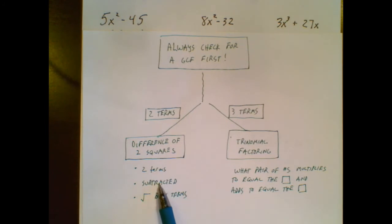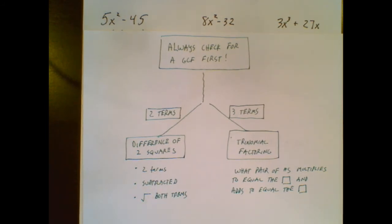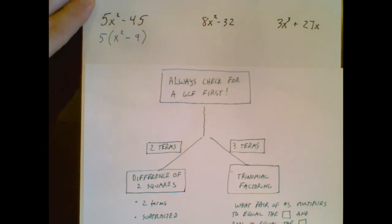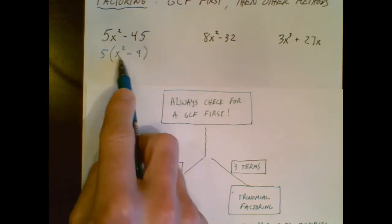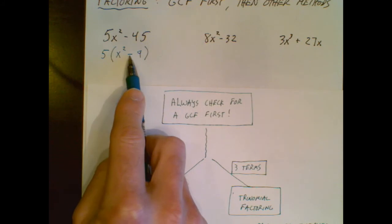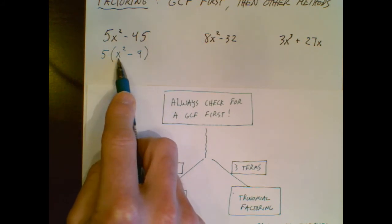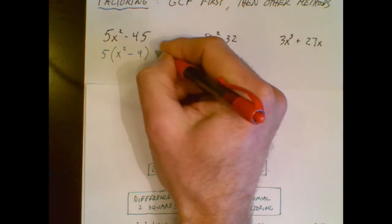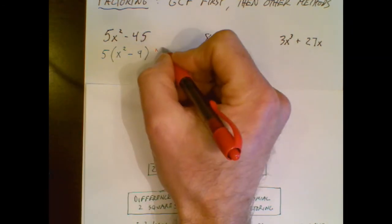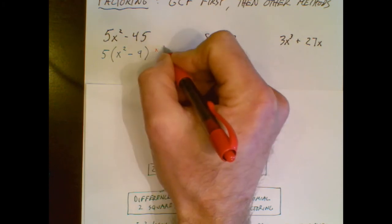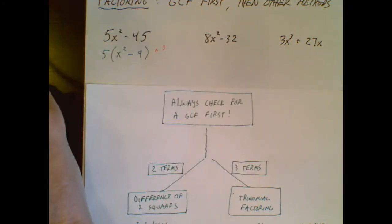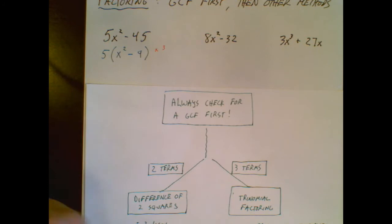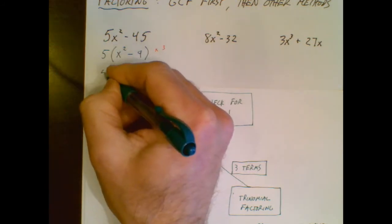So then I would ask myself these three questions. If there are two terms, are they subtracted and can I square root both terms? Well, there were two terms. I already said that. They are subtracted and I can square root that and I can square root that. So floating around in my head, the square root of x squared is an x. The square root of a 9 is a 3.